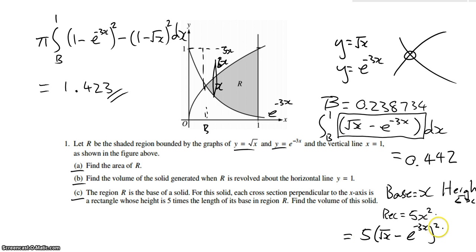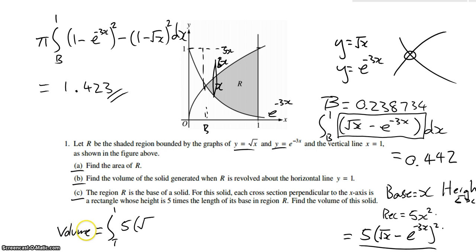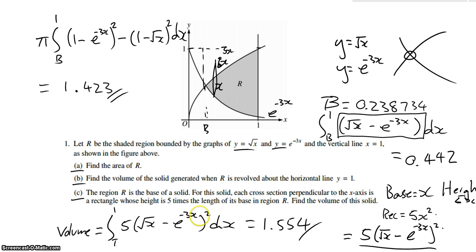After we've come up with the general term, all we have to do is put it in an integral. Volume equals the integral from B to 1 of 5 times the quantity — square root of X minus e to the negative 3X — squared, dx. We plug it into the calculator and we should get 1.554.